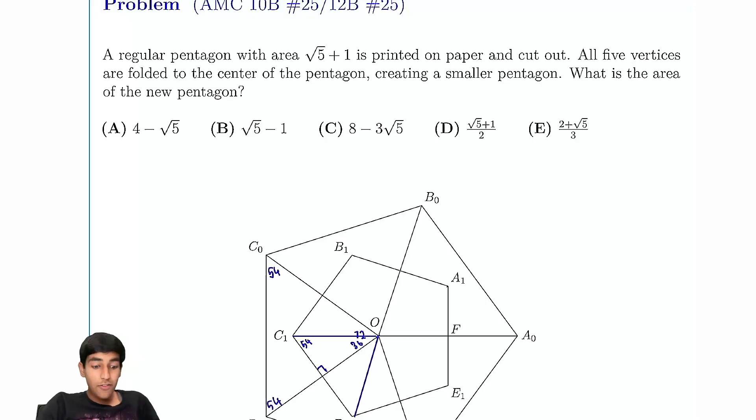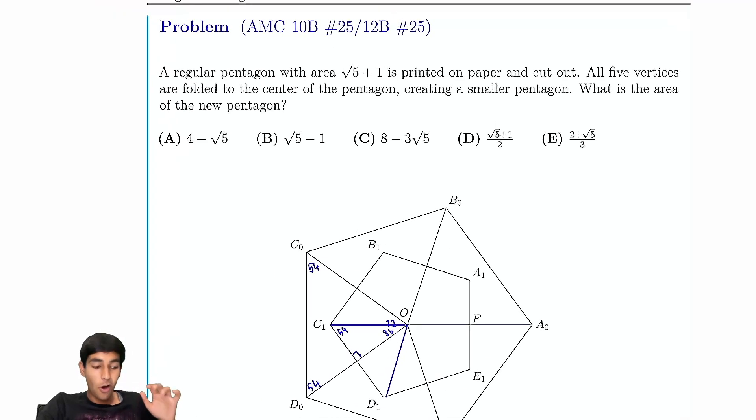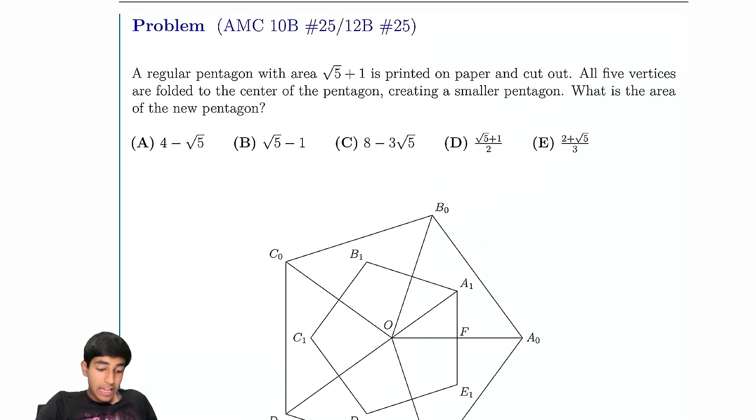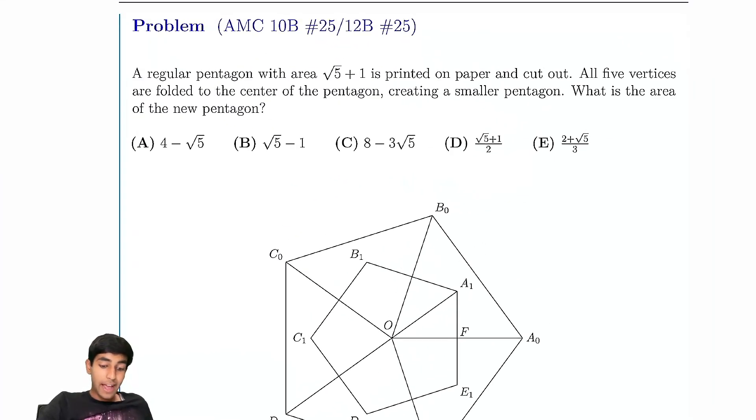Let's now tackle number 25 on the 10B and the 12B, the hardest problem in the entire contest. We have a regular pentagon with area √5 + 1, and it's printed on paper and cut out. All five vertices are now folded to the center, creating a smaller pentagon. What's the area of this new pentagon?